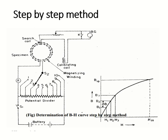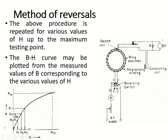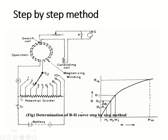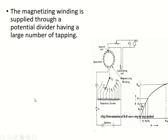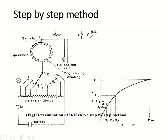The next method is the step-by-step method — the second method for finding the BH curve. In this method, instead of a rheostat, we are using a potentiometer divider arrangement with a certain number of tappings. The setup is the same as that of the method of reversal — a ring specimen with a ballistic galvanometer connected in parallel with a key — but the rheostat arrangement is replaced by a potentiometer divider arrangement.